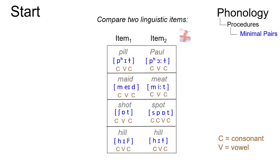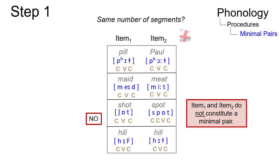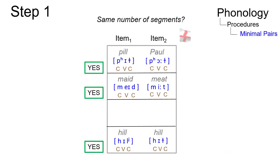Then, identify and count the number of sound segments in both items of the pair. If the number of identified segments is different, the items in question do not constitute a minimal pair. If both items exhibit the same number of segments, go to step two.